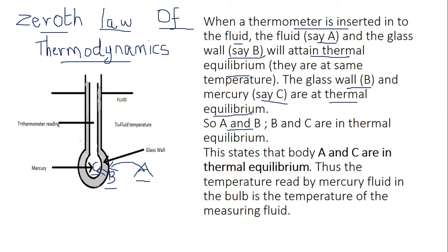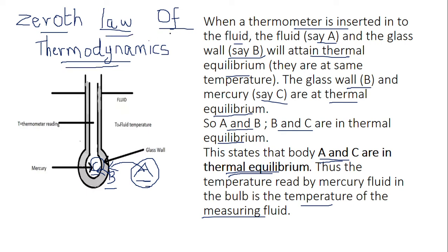A and B are in thermal equilibrium, and B and C are in thermal equilibrium — the liquid and bulb, then the bulb and mercury. This states that A and C are also in thermal equilibrium. The temperature of the fluid and the temperature of the mercury will be the same, which allows us to find the temperature of the fluid. This is the Zeroth Law of Thermodynamics — the principle of working of a thermometer.